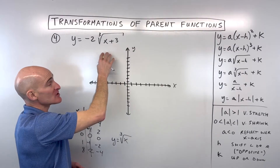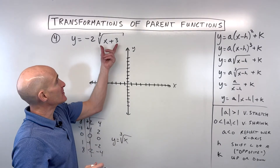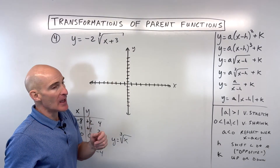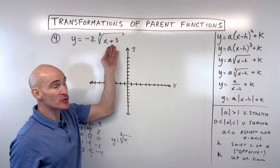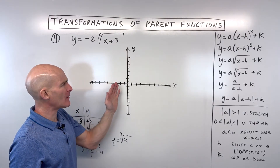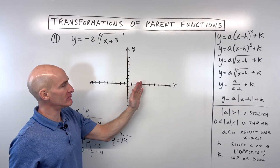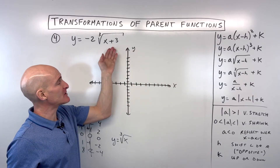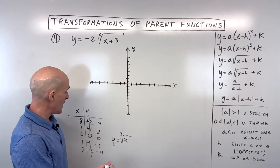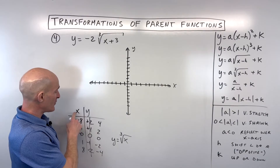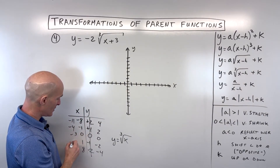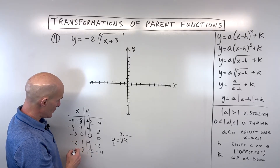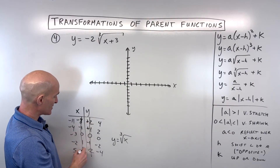The plus 3 is grouped with the x — it's underneath the cube root radical. When grouped with x it has the opposite effect: you'd think plus 3 means go right 3, but it actually shifts left 3. Subtract 3 from all x values, giving x values of -11, -4, -3, -2, and 5.